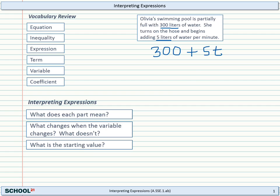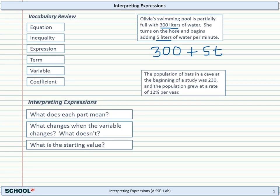Now let's look at an exponential example. The population of bats in a cave at the beginning of a study was 230. And the population grew at a rate of 12% per year. So we can set up an exponential expression to represent this. And you know that an exponential expression usually starts with the starting value there. And there's a few different ways to write this. But we'll go ahead and write 1 plus and then 12% but written as a decimal. So 0.12 to the T power. And that's an exponential expression like you're used to.